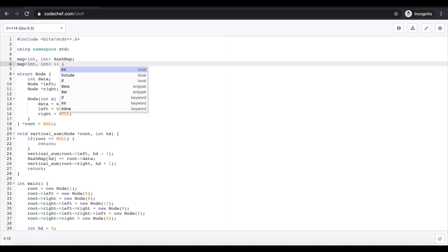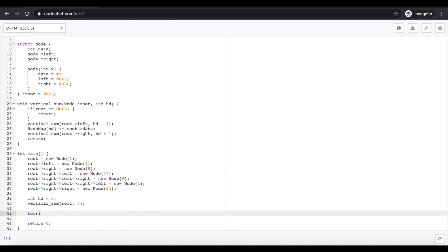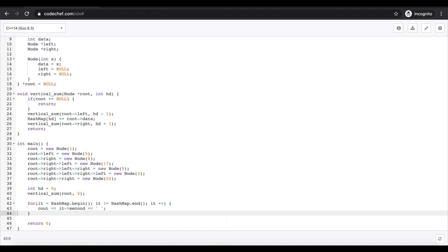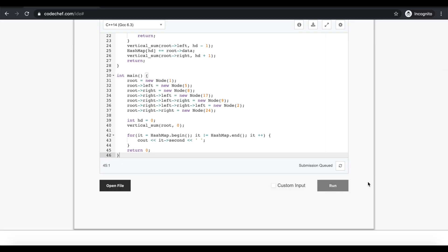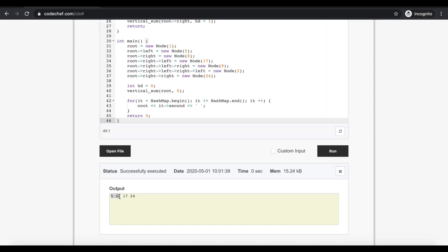That's it. Let's print the values from the hash map from the beginning to the end using the iterator, which will eventually represent the vertical sum from the leftmost vertical line to the rightmost vertical line. Now we'll run the code. And you can see the output or answer is as expected.